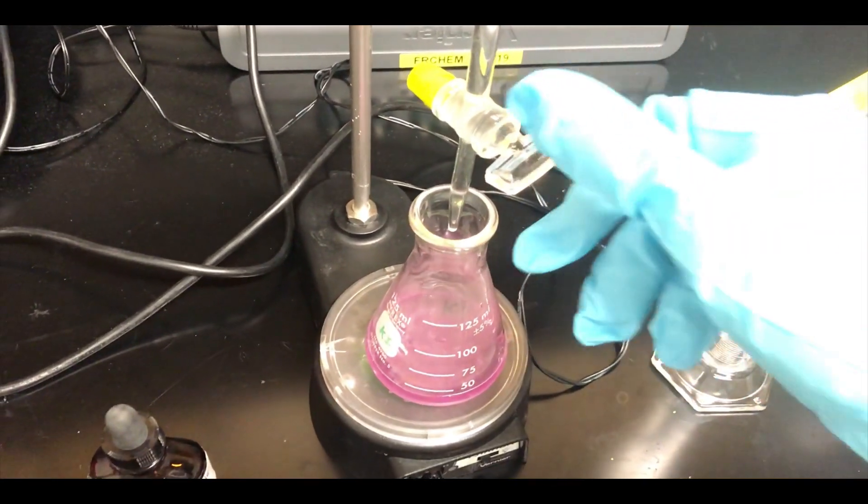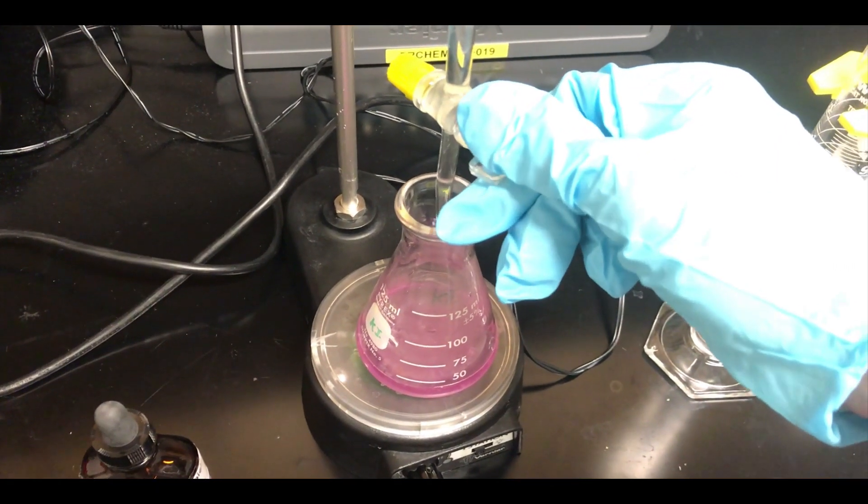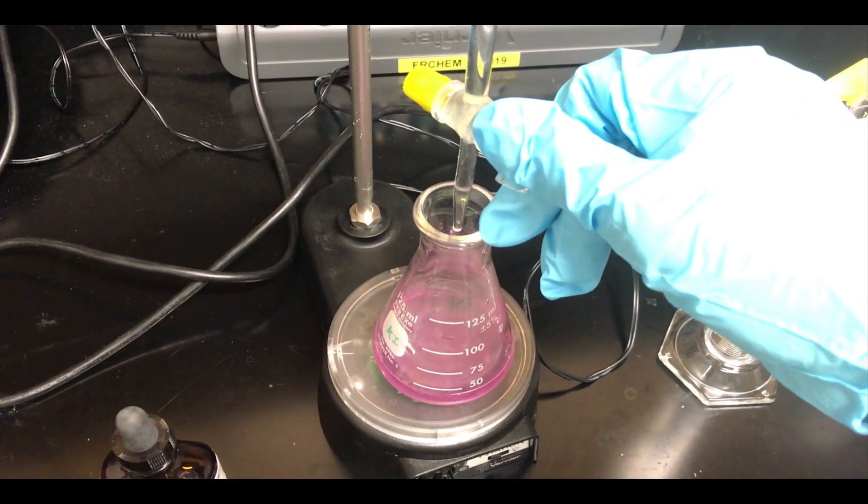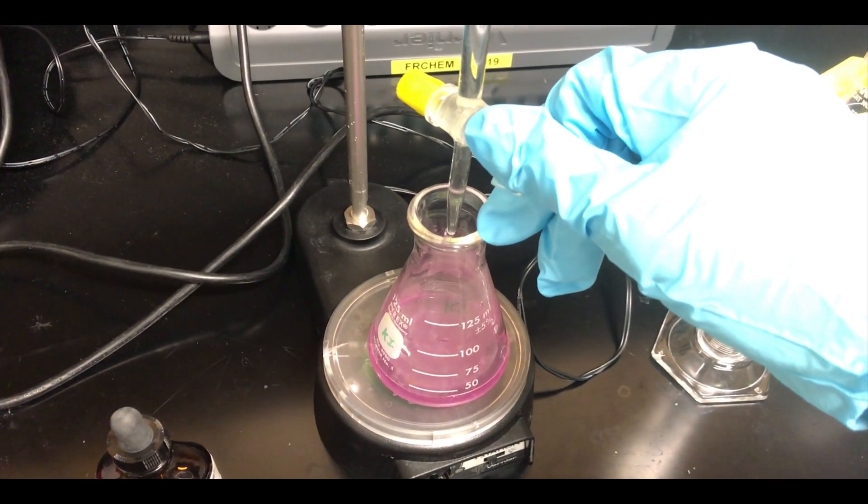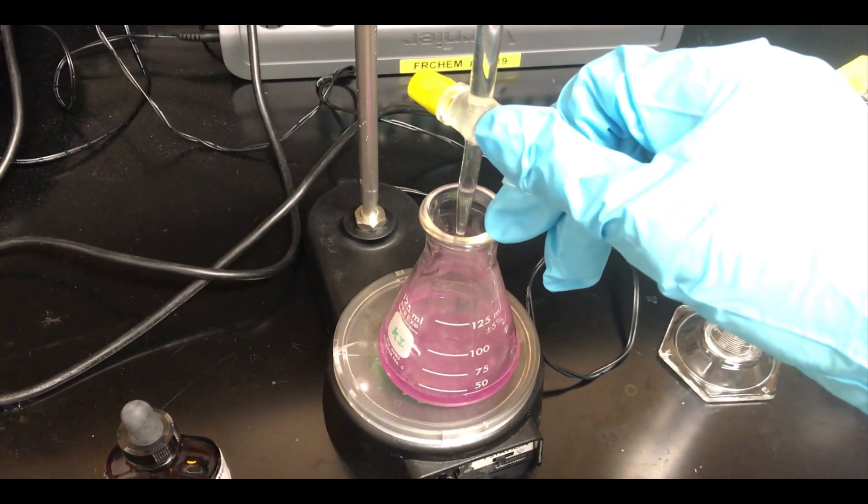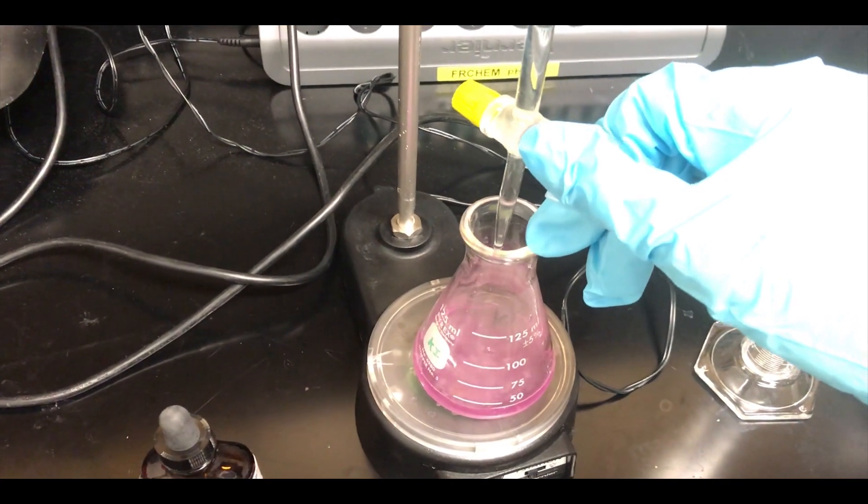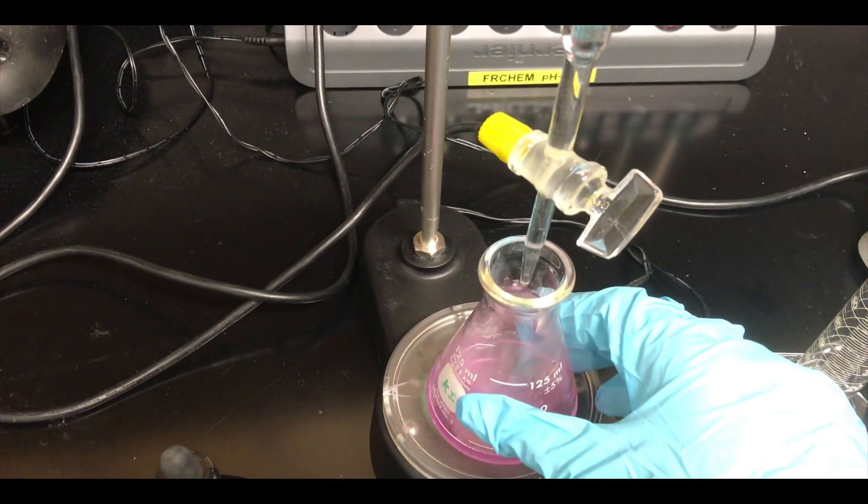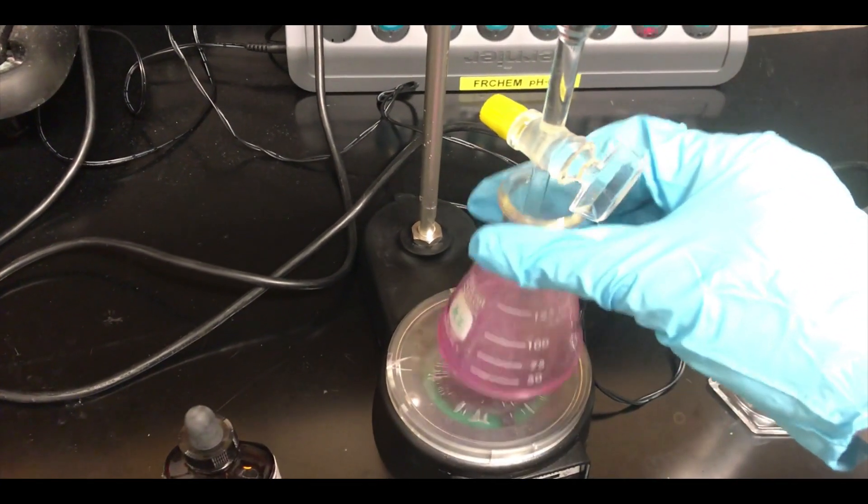And now we will open that stopcock and start dispensing dropwise our solution of hydrochloric acid. And we're going to continue to do this until that solution goes from the deep pink that you see right here to a light pink color with swirling of the Erlenmeyer flask. Or if you have a small stir bar you want to add and use the stirring capabilities of the burette stand, you absolutely can as well.